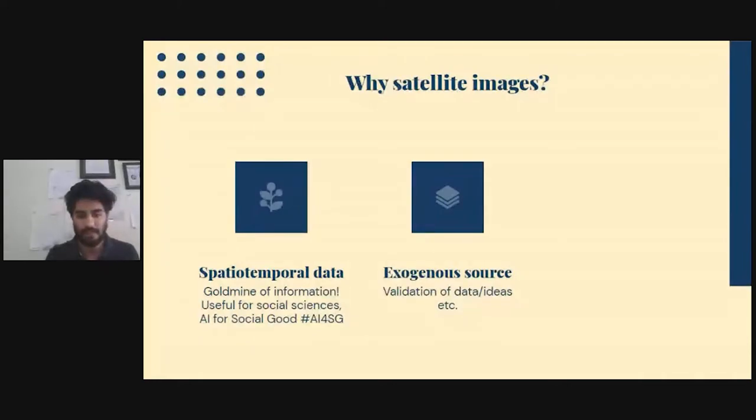Point number two, a very important point: you can use satellite images as an exogenous source. Say you have collected some data from sensors, and you want to validate that data. Say you're estimating the population in a region. Usually you conduct censuses and surveys. But another clever way to do this is to see how many houses there are in a place from satellite images, maybe see what is the average number of people in one house, and try to approximate what the population might be. You can approximate scientific inquiries with this. This validation of data applies to ideas too.